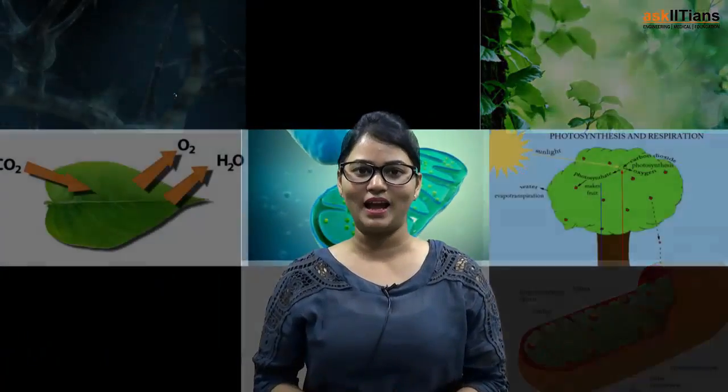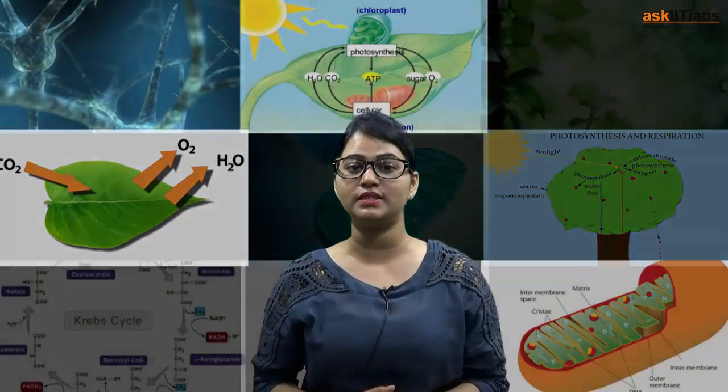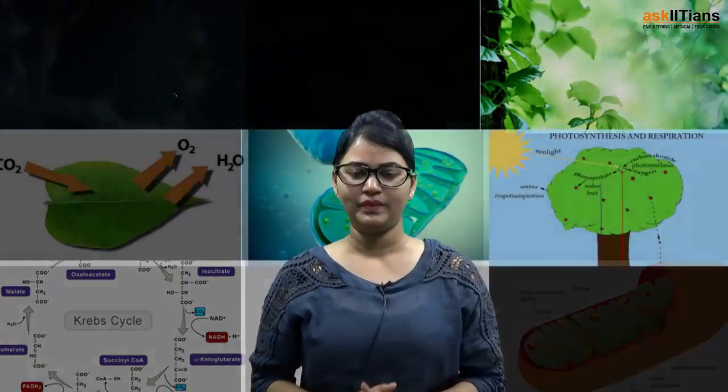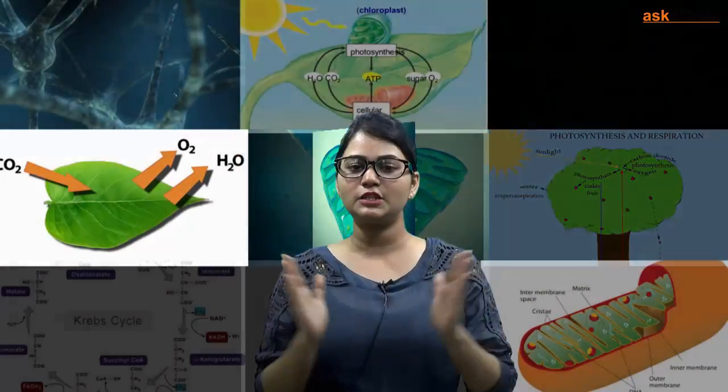Hey students, welcome to the fifth part of the chapter Respiration in Plants. In this part we will be discussing about the Krebs cycle. The complete process of cell respiration consists of glycolysis, Krebs cycle, and oxidative phosphorylation. The product of glycolysis, that is pyruvic acid, initiates the Krebs cycle. Let's have a look at how this complete cycle takes place.